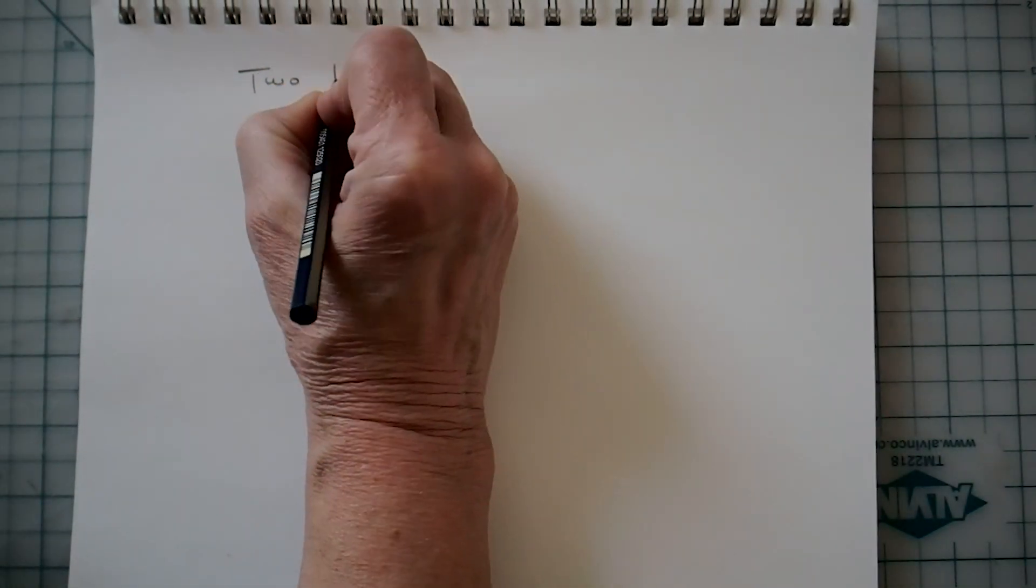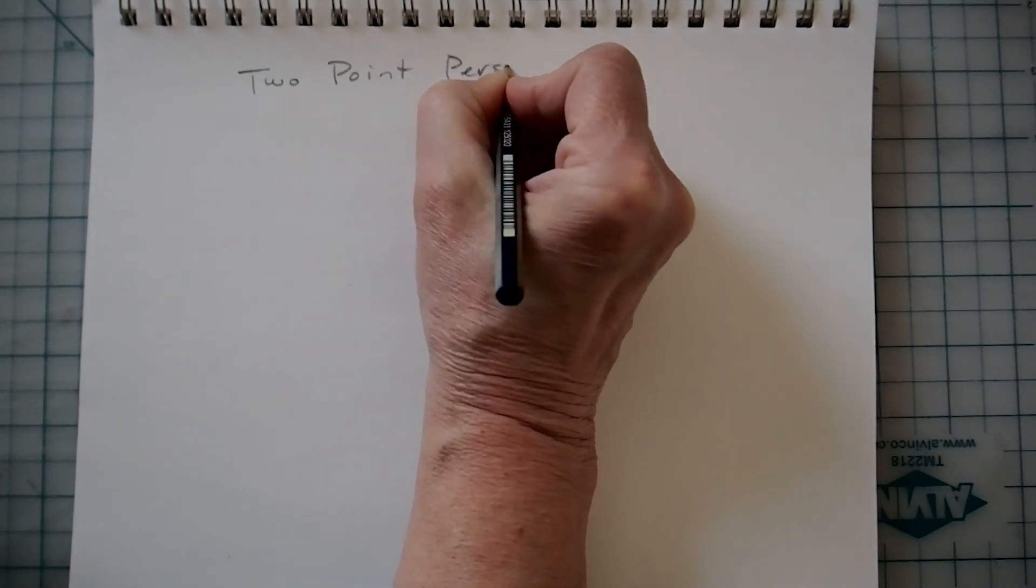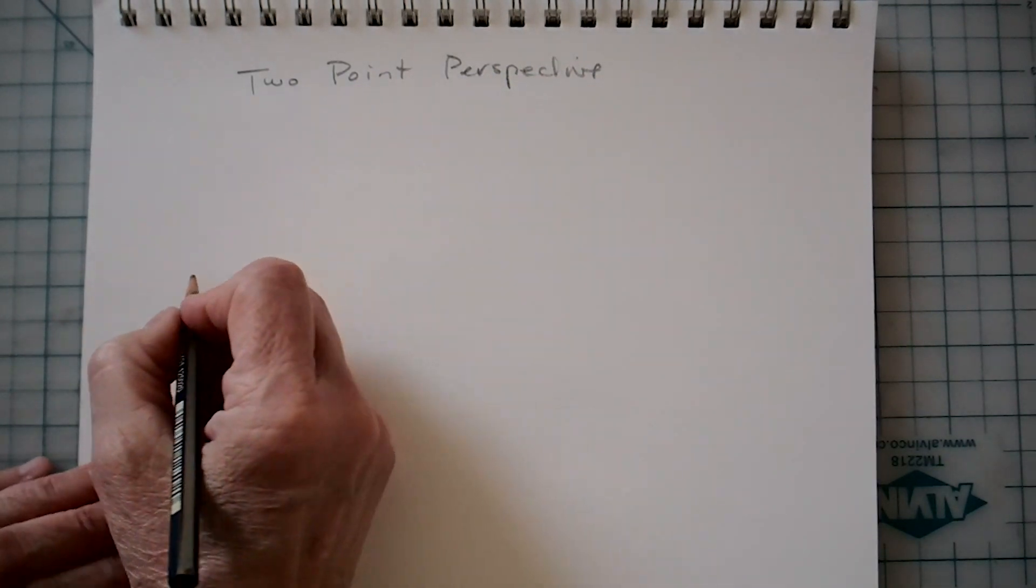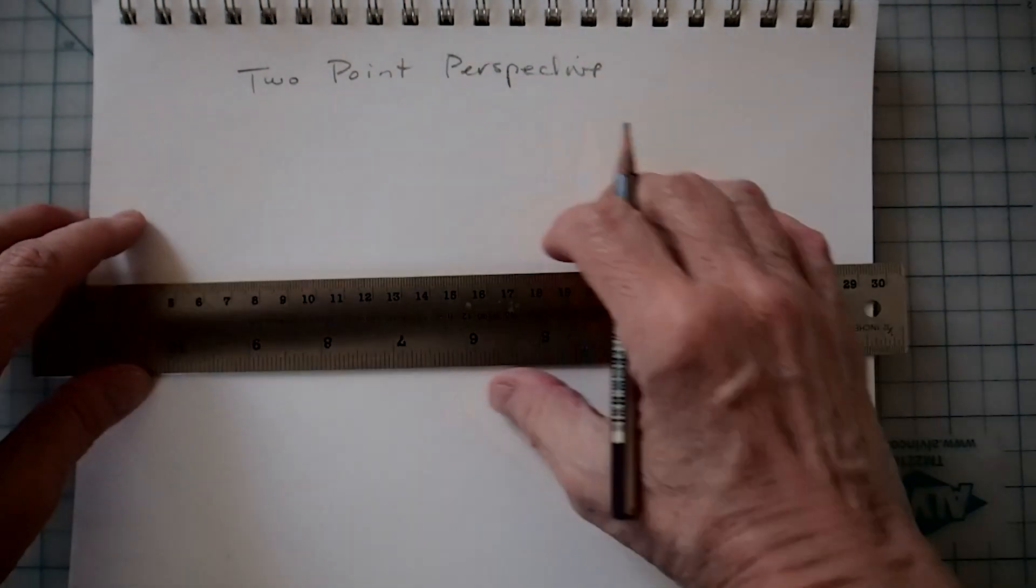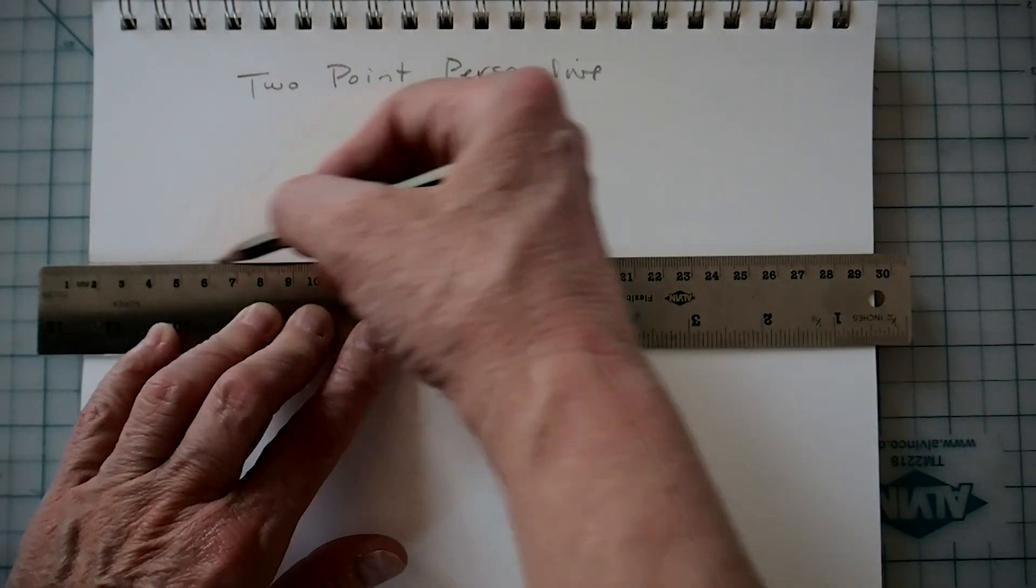Hi class. Now this is going to be about two-point perspective. So we start the same way we do with one point by drawing the line across the paper.